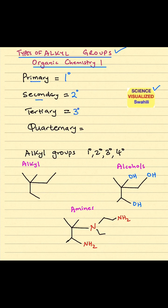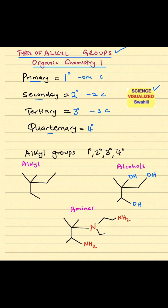Tertiary is 3°, and then quaternary is 4°, and that's the maximum number of alkyl groups that you can have. In other words, primary means only one other carbon connected to it. Secondary means the carbon you're looking at has two carbons connected to it. Tertiary means three carbons connected to it, and quaternary means the carbon you're looking at has four carbons connected to it.